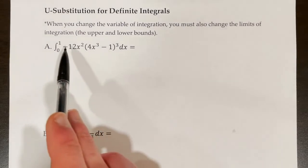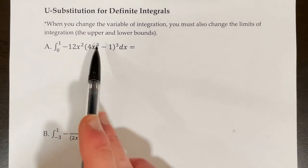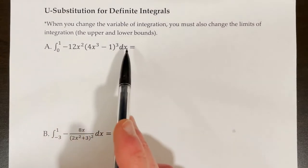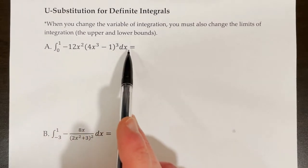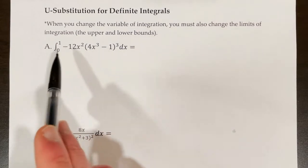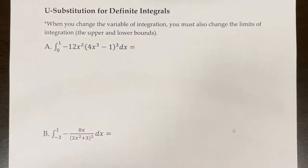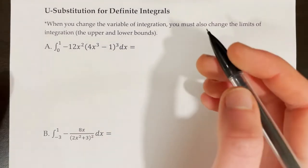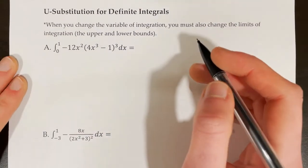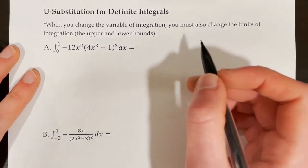For instance, when we change example A — when we switch this over to a du — we can no longer use the bounds 0 and 1. We're going to have to have different bounds. Now I'm going to explain exactly how we do that.